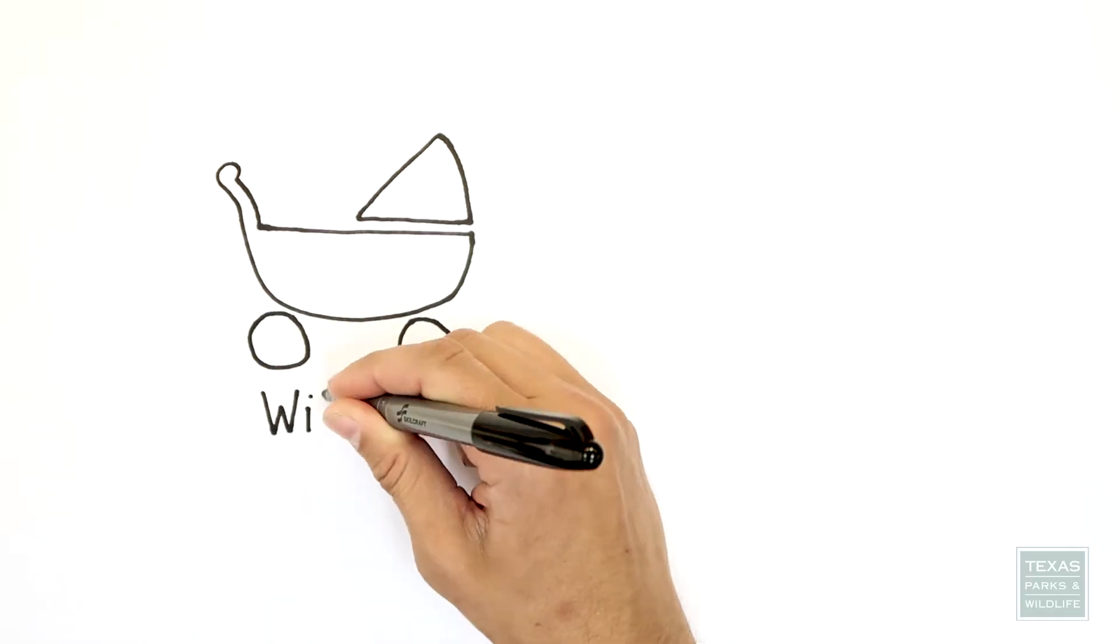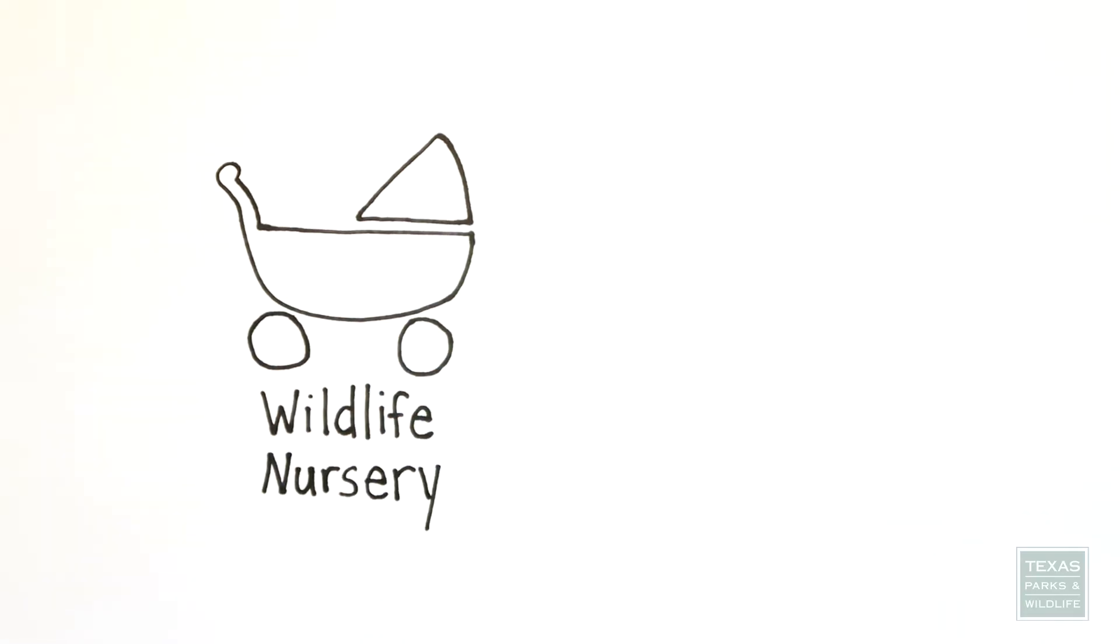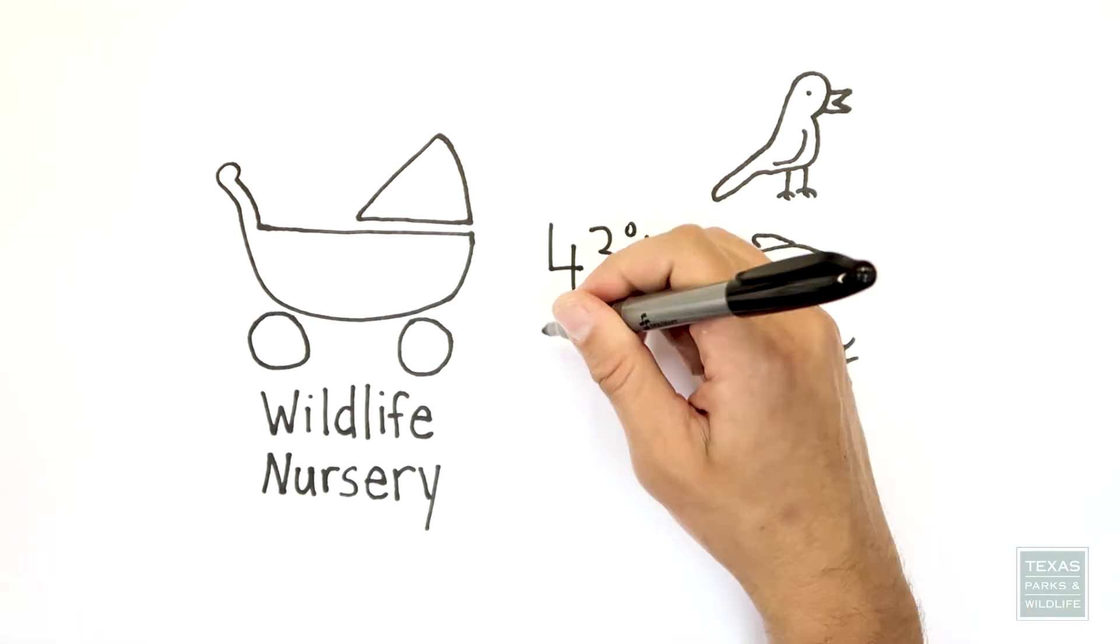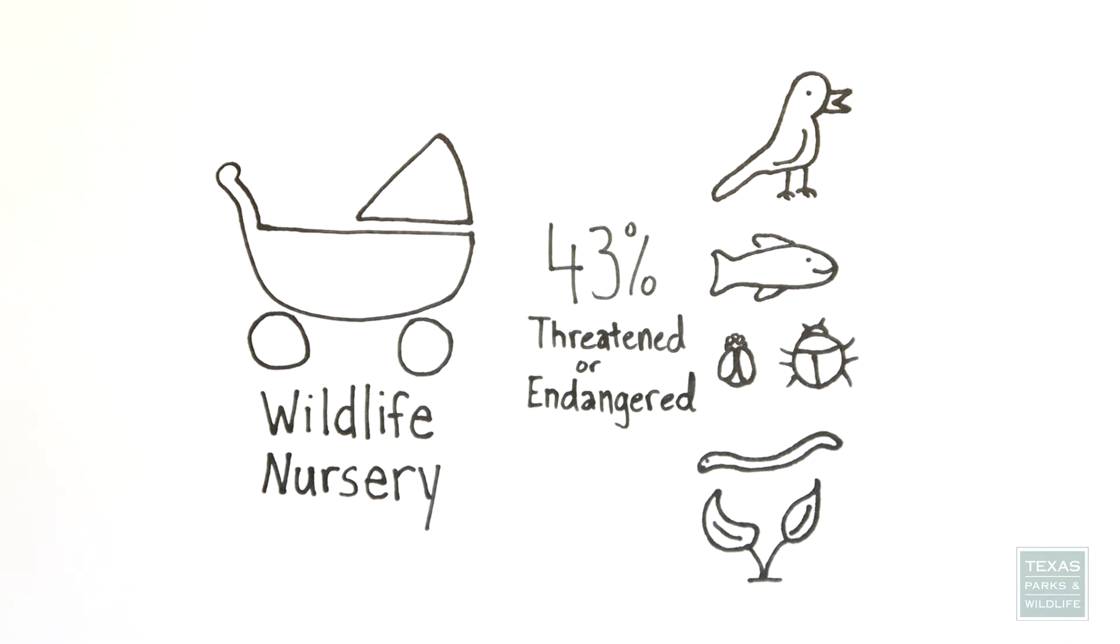Wetlands are also a great nursery for wildlife. Up to 43% of North America's threatened or endangered species depend on wetlands for survival in the early stages of their life. Wetlands are rich in nutrients and increase the food supply all the way up the food chain.